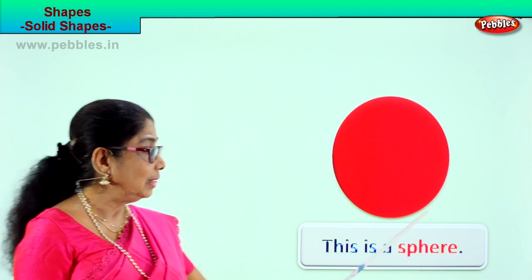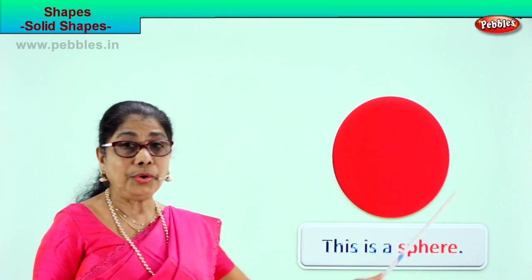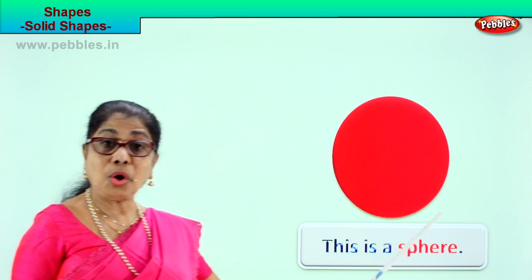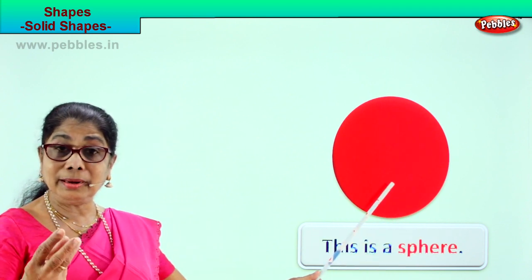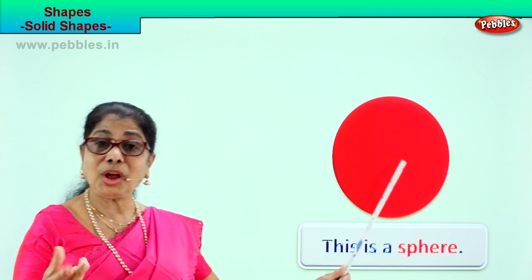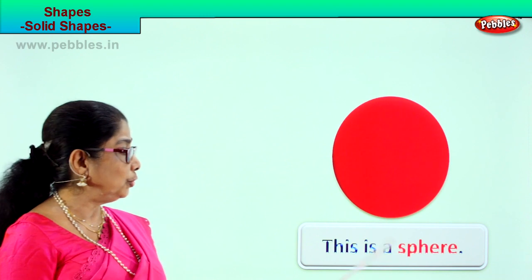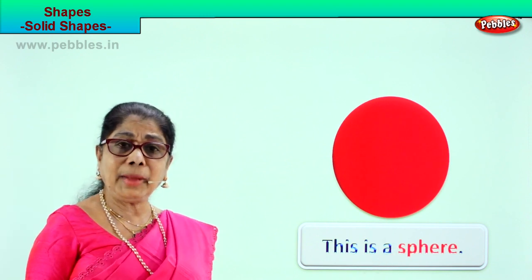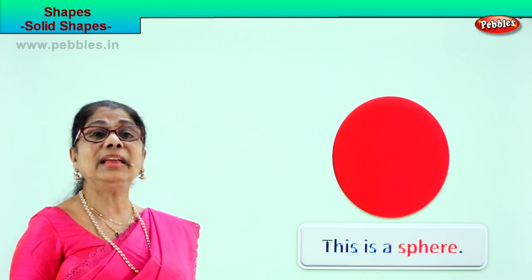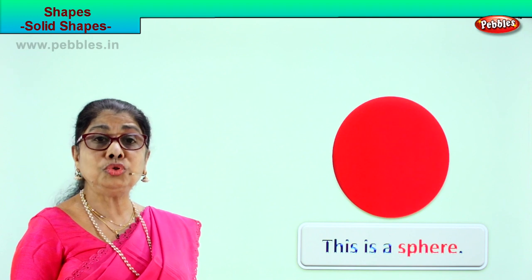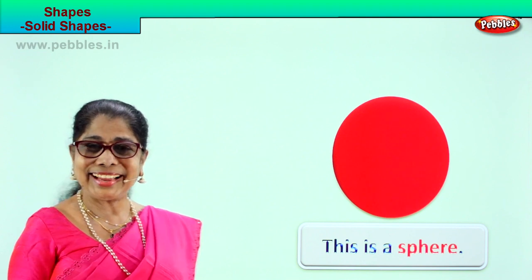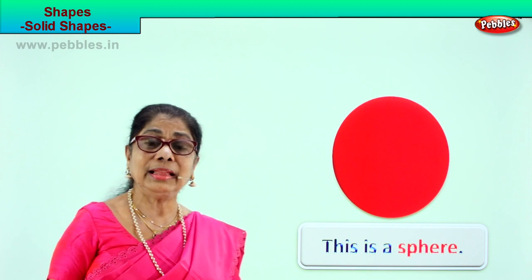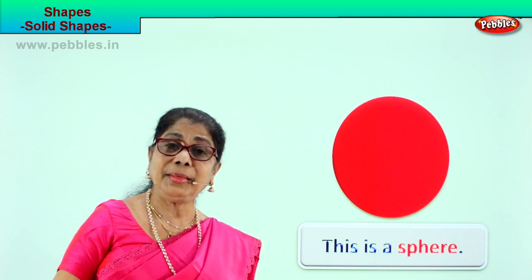Sphere — this solid red rubber ball or marble. Look out for spheres in your house, ask mummy to show you. Marbles and huge balls are spheres. This is a sphere.